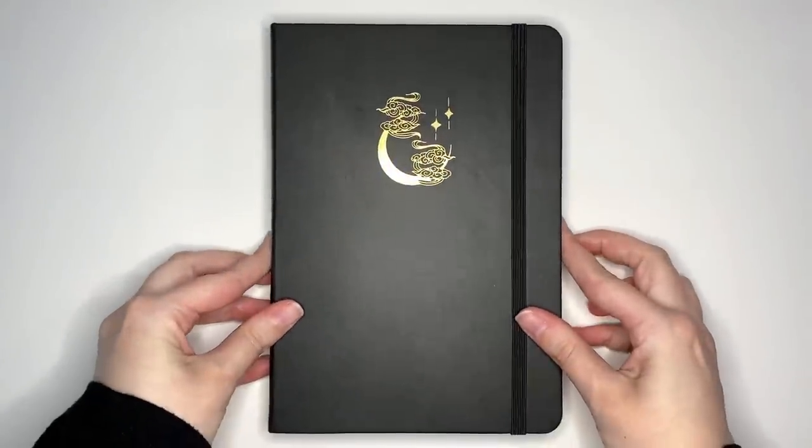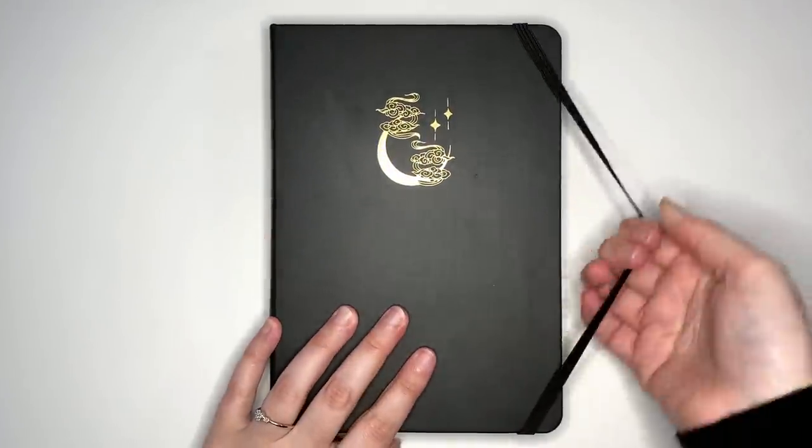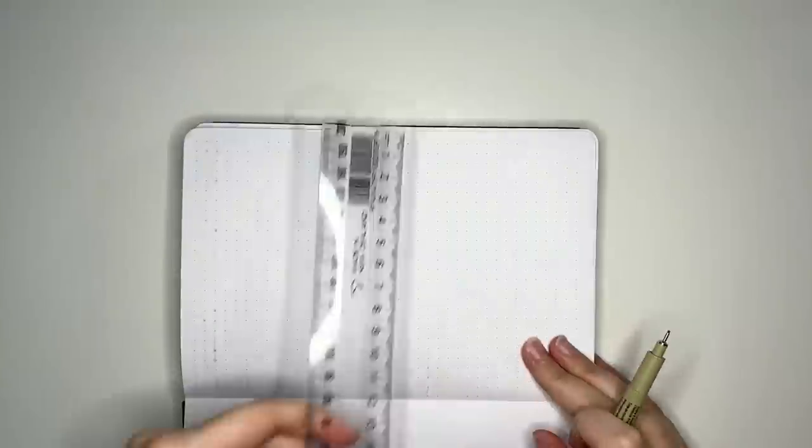If you wanted to see a new bullet journal setup with minimal decoration, then you have come to the right place. Today we are setting up Vogel's journal for the year of 2023, but of course these ideas can be used for any year.